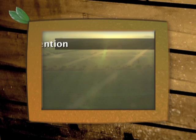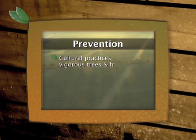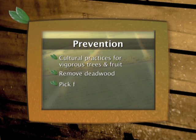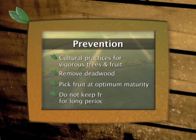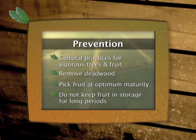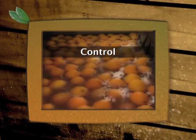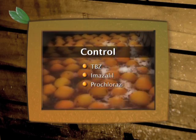To prevent the development of Anthracnose rot, it is important that production practices promote tree vigour and fruit quality, and that deadwood is removed from trees. Fruit must be harvested at optimum maturity and should not be kept in storage for lengthy periods. The fungus is controlled by packhouse treatments with TBZ, imazolil and prochloraz.